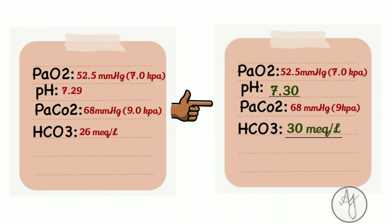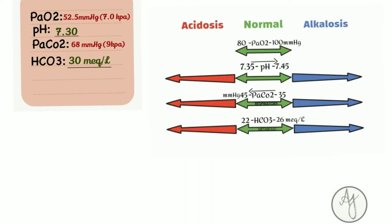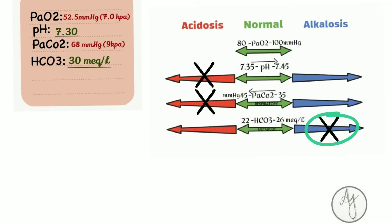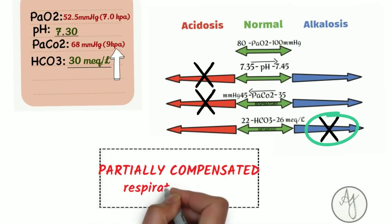Now let's change the values a little. Oxygen is still 52.5 mmHg, pH is slightly increased to 7.30, carbon dioxide is at 68 mmHg, and bicarb is 30 mEq/L. The pH is still acidotic, but bicarb — which is alkaline — has increased to try and neutralize the respiratory acidotic component by increasing alkalinity. The body has raised the bicarb level to neutralize the acidosis from the respiratory side. This is partially compensated respiratory acidosis — partial because pH is still in the acidotic range.